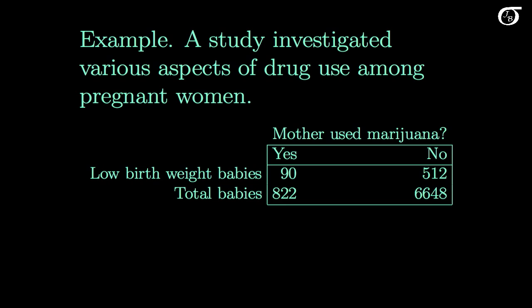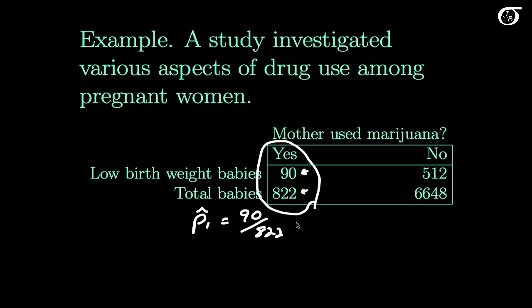Here's the example we're going to work with. The study investigated various aspects of drug use among pregnant women, and one of the variables measured was whether the mother used marijuana during her pregnancy, and then whether the baby had a low birth weight. We have a sample of women who used marijuana during their pregnancy, broken down between the total babies — 822 in the sample — and 90 of those babies had a low birth weight. So our sample proportion p̂₁ is 90 over 822, which equals 0.109 to three decimal places.